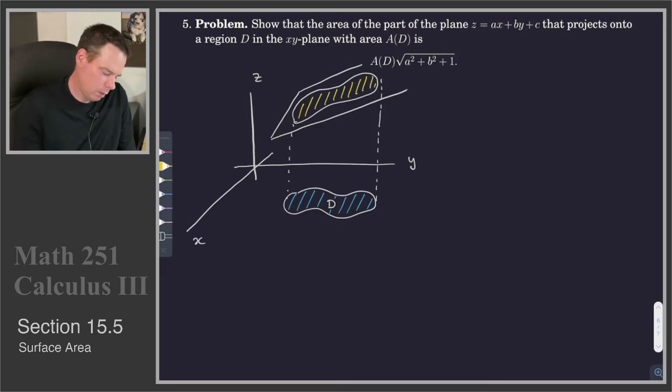And that's the region we would like to find the area of. In fact, we want to show the area of this region up above is related to the area of the region down below, no surprise. But it's related in that it is the square root of A squared plus B squared plus 1 times the area of the region below.